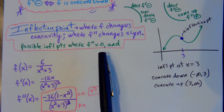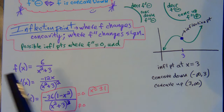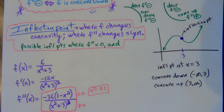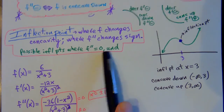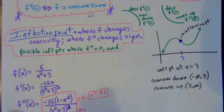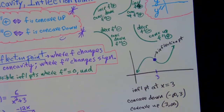We'll make an x, y, y-double-prime chart, choose test numbers to the left and right of the possible inflection points, and check if the second derivative changes sign. If it goes from plus to minus or minus to plus, that's an inflection point. Unlike max/min where you distinguish plus-to-minus vs. minus-to-plus, for inflection points any sign change confirms it — that's it.